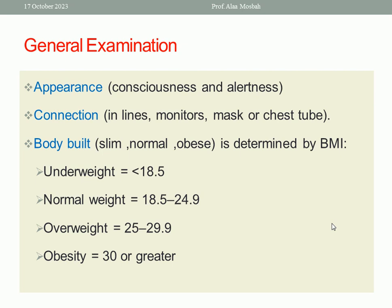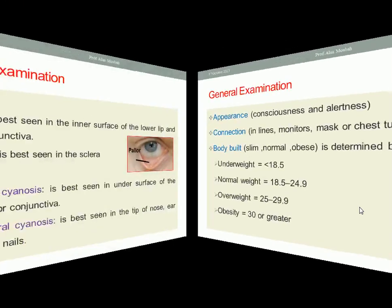We say this lady is underweight if her BMI is below 18.5. She is normal weight if BMI ranges between 18.5 and 24.9. She is overweight if BMI ranges between 25 and 29.9. She is obese if her BMI is 30 or greater. Obesity is classified into three types: Class 1 (30–34.9), Class 2 (35–40), and morbid obesity (above 40).